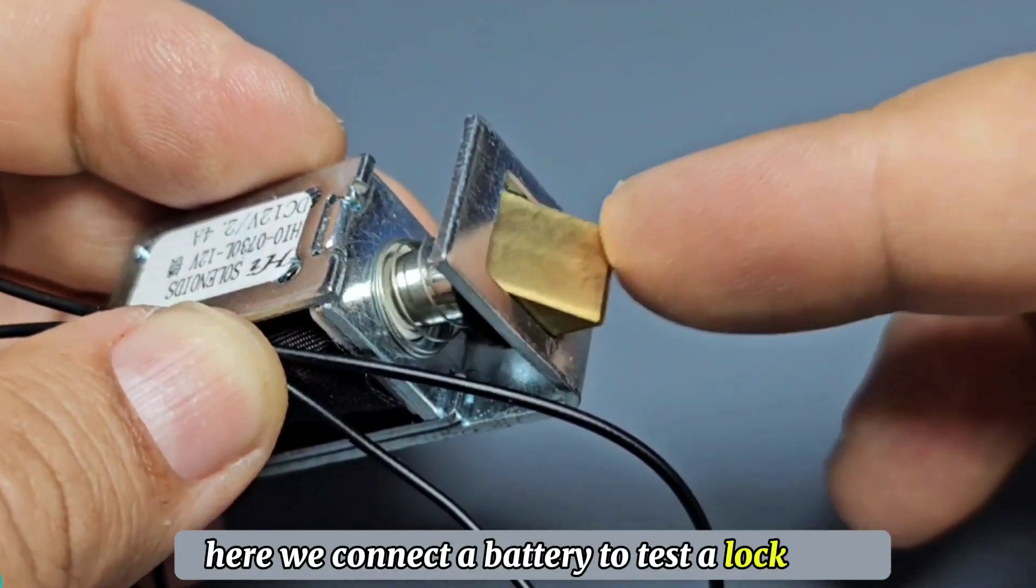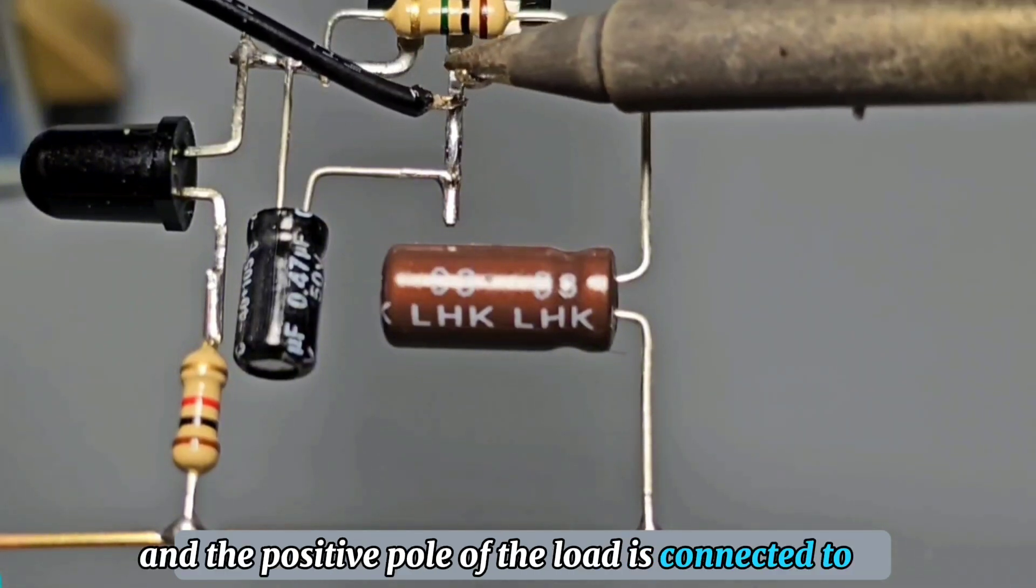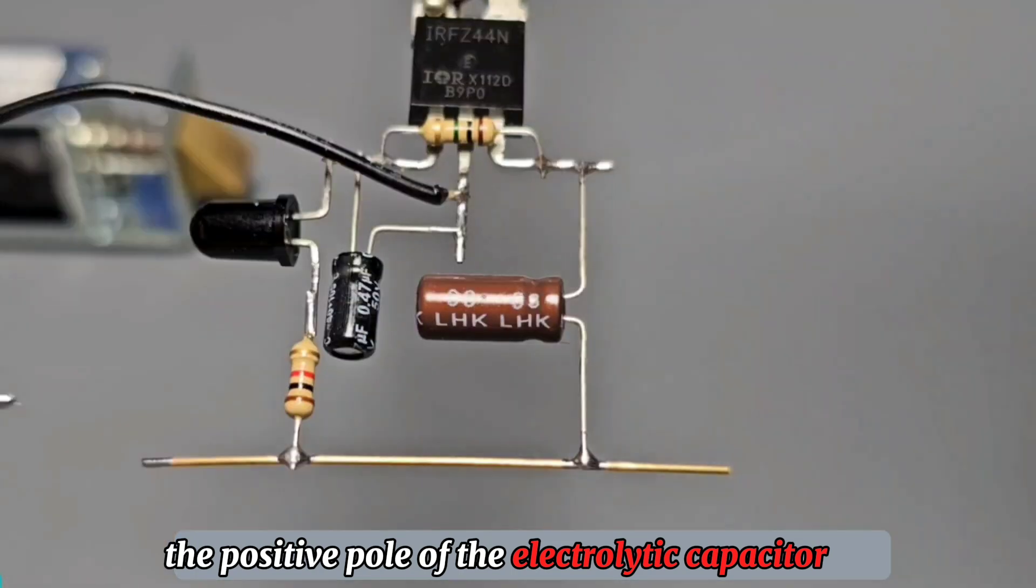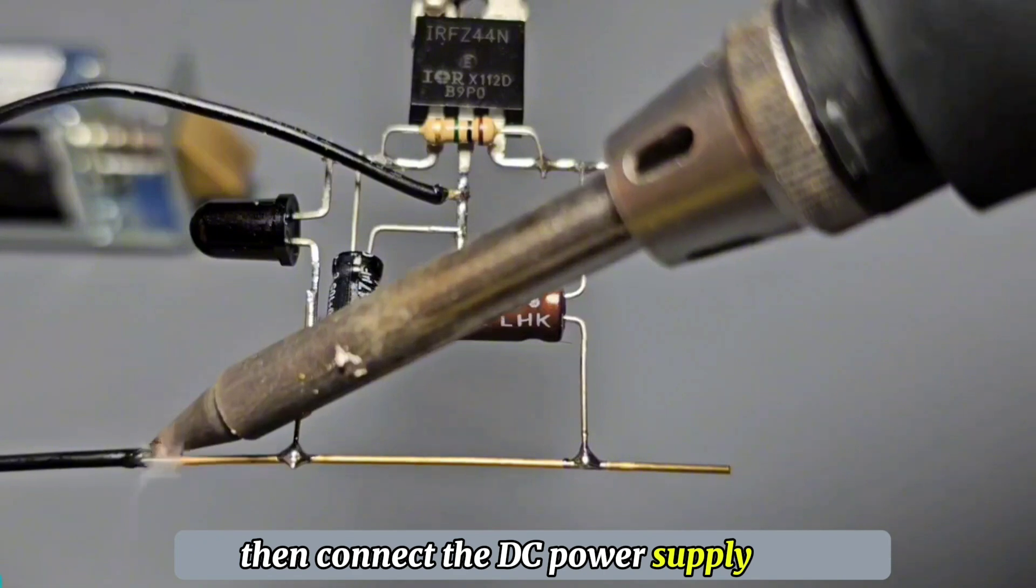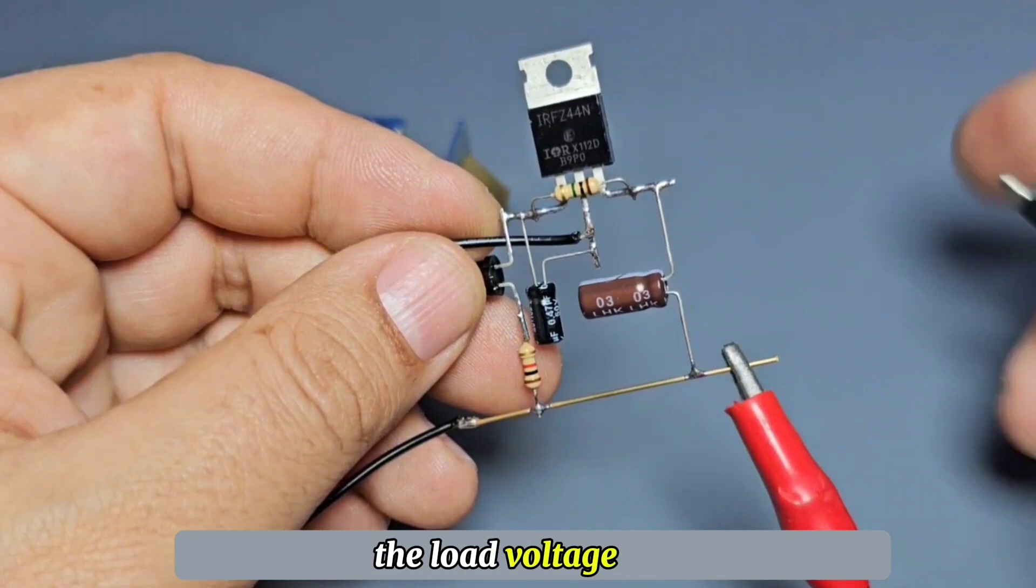Here we connect a battery to test a lock. The negative pole is connected to the drain of the MOSFET and the positive pole of the load is connected to the positive pole of the electrolytic capacitor. Then connect the DC power supply as shown in video. The working voltage of this circuit is based on the load voltage, the voltage rating of the infrared receiver, and the capacitor.